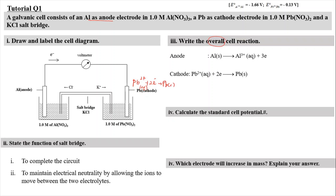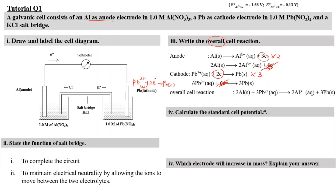To make the overall cell reaction, we need to ensure the number of electrons is the same so they cancel out. Therefore, the anode equation is multiplied by 2, and the cathode equation is multiplied by 3. This gives: 2Al(s) → 2Al³⁺(aq) + 6e⁻ at the anode, and 3Pb²⁺(aq) + 6e⁻ → 3Pb(s) at the cathode. The 6 electrons cancel, leaving the overall reaction: 2Al(s) + 3Pb²⁺(aq) → 2Al³⁺(aq) + 3Pb(s).